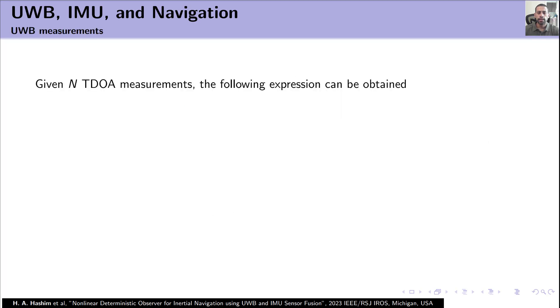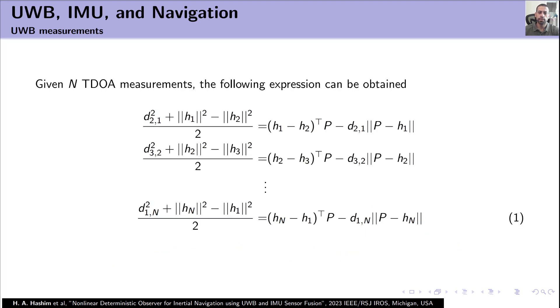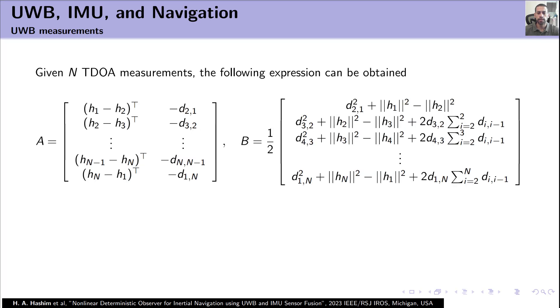Given N TDOA measurements, the following expression can be obtained. Using this expression, we can construct A matrix and B matrix, and thereafter we can obtain a reconstructed position of the vehicle. However, we need to keep in mind that the reconstructed position P_y is noisy and normally it's a bit far from the true position of the vehicle.